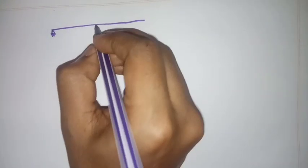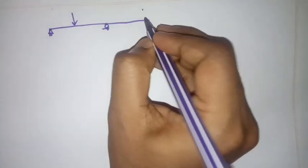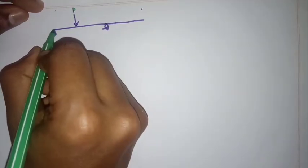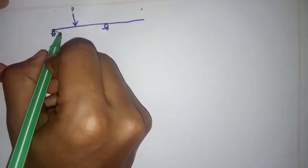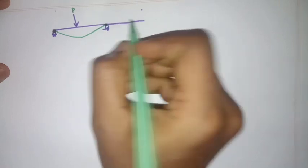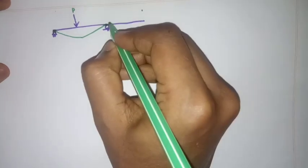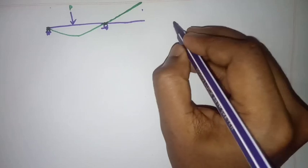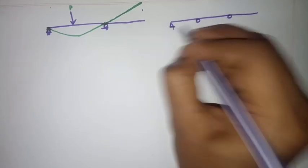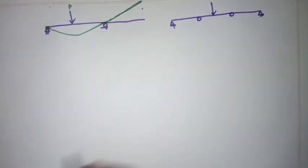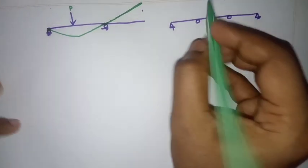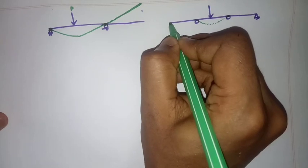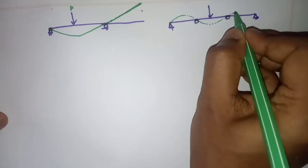For a beam with a hinge support and a roller support with a load applied, at the supports there is rotation but no deflection. For the portion with no support, there will be deflection — it will go up. Similarly, if the beam has an overhang, at the supports there is no deflection but the overhanging ends will go up.